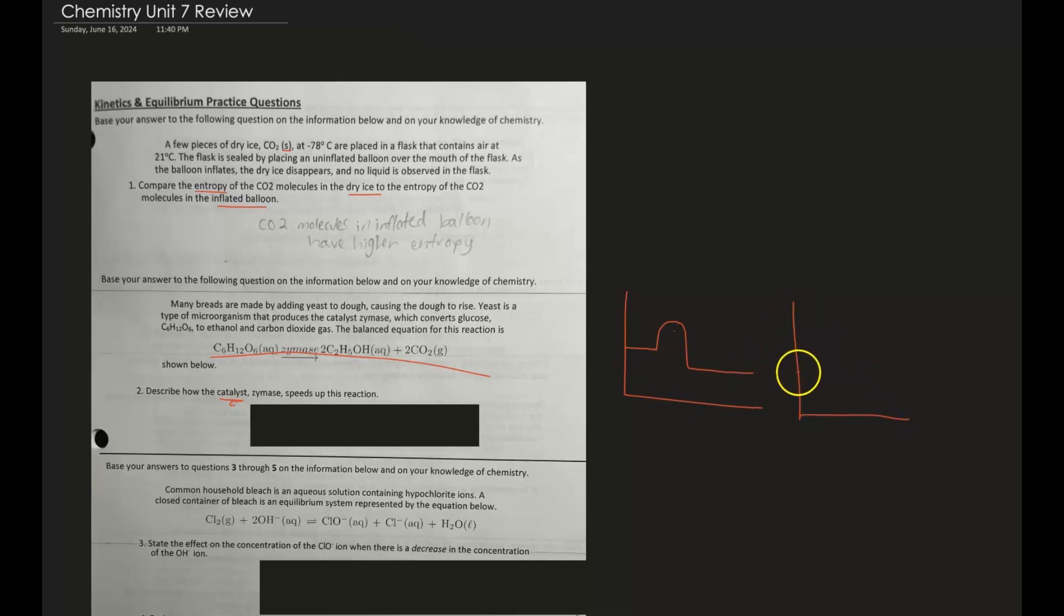Or if you had something that was endothermic, it would look like this - boom, and it comes back down. So a catalyst at the end of the day is just what dictates this thing right here. That would be lowered, and so ultimately it would be speeding up the reaction by decreasing that activation energy.